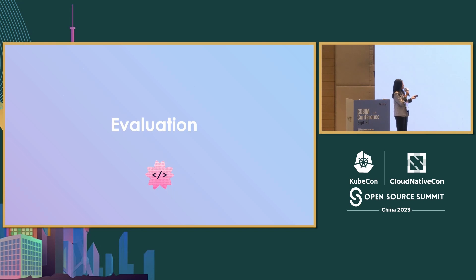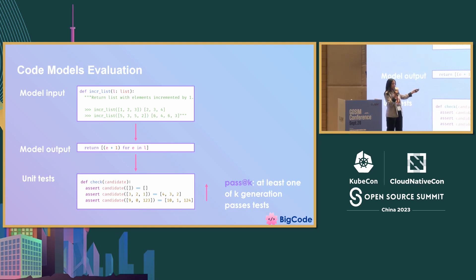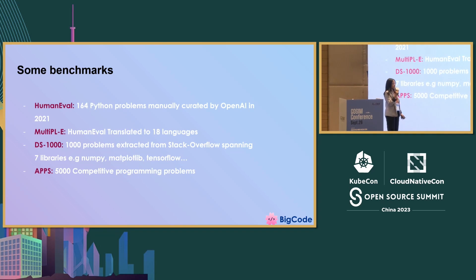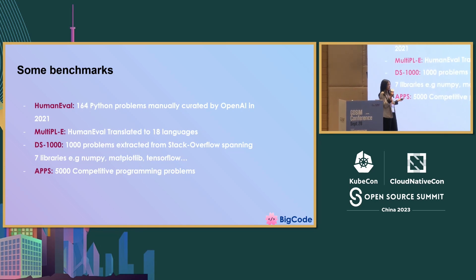That was it for training. Regarding evaluation, the way we evaluate these models is we give them a docstring and a function signature, they have to complete the function, then you run it against tests and compute a metric called Pass@K. Some very popular benchmarks are HumanEval, which has 160 Python problems released by OpenAI. It feels like a lot of people are just using this, but if you see someone releasing a model and only evaluating on HumanEval, please ask them to also give you results on other benchmarks — it's just not enough. It's only 160 problems. How can you evaluate a model on just that?